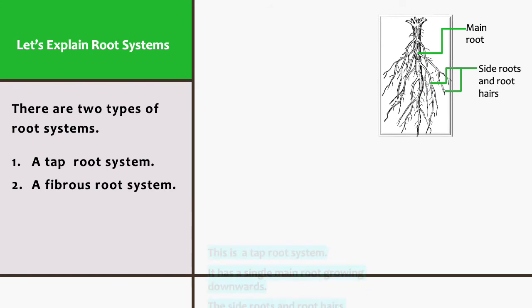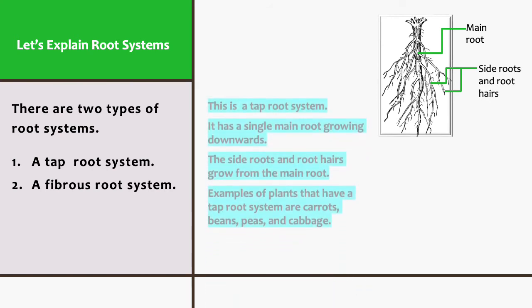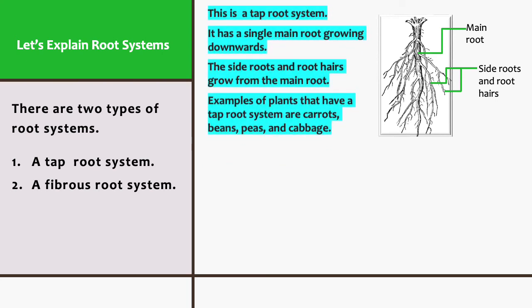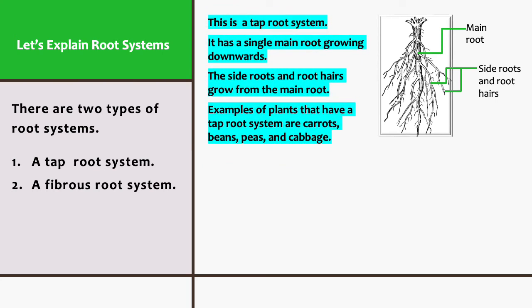This is a tap root system. It has a single main root growing downwards. The side roots and root hairs grow from the main root. Examples of plants that have a tap root system are carrots, beans, peas, and cabbage.